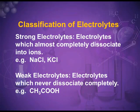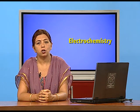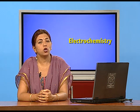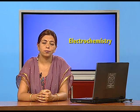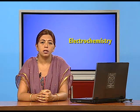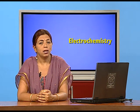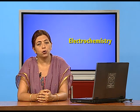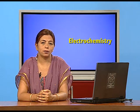Strong electrolytes are those substances which almost completely dissociate into ions — for example, sodium chloride and potassium chloride, which almost completely dissociate into ions when we dissolve them in water. Weak electrolytes never completely dissociate into ions — for example, acetic acid and ammonium hydroxide.